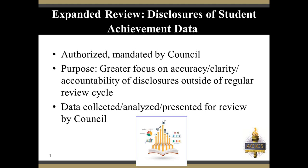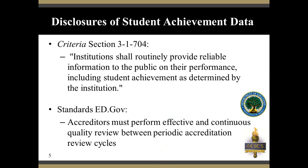The purpose is to focus on the accuracy, clarity, and accountability of the disclosures of student achievement data by the institutions outside of the regular review cycle. This data will be collected, analyzed, and presented for review by council. Specifically, what gives us the authority? In criteria section 31704, it says that institutions will routinely provide reliable information to the public on their performance, including student achievement as determined by the institution. Secondly, standards applied by the Department of Education require accreditors to perform effective and continuous quality review between periodic accreditation review cycles.